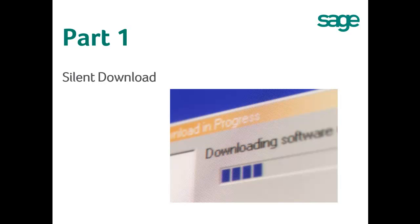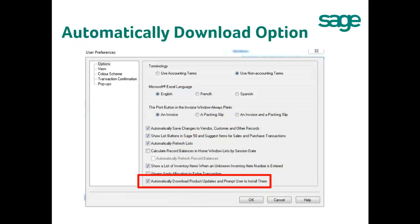Part 1: Silent Download of the 2015 Update. In order to utilize the Silent Download feature, please open Sage 50. Then go to Setup in the menu bar, then User Preferences, and confirm a checkmark has already been placed on 'Automatically download product updates and prompt user to install them.'